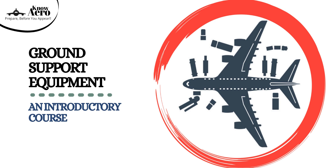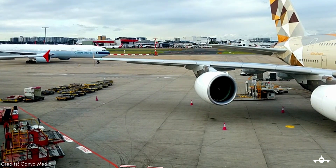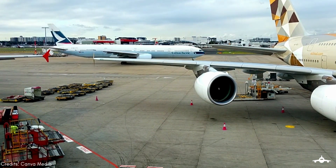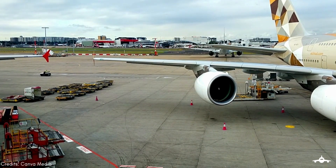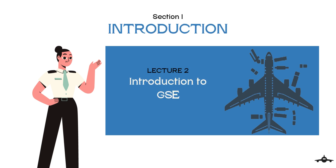Welcome back to Ground Support Equipment, an introductory course. Do you all know that there are nearly 20 ground activities performed on an airplane, and each of them is performed by a specialized machine, equipment, or vehicle? In this lecture, we will learn about the basic understanding of ground support equipment. We will also take a quick review of the content of this course.